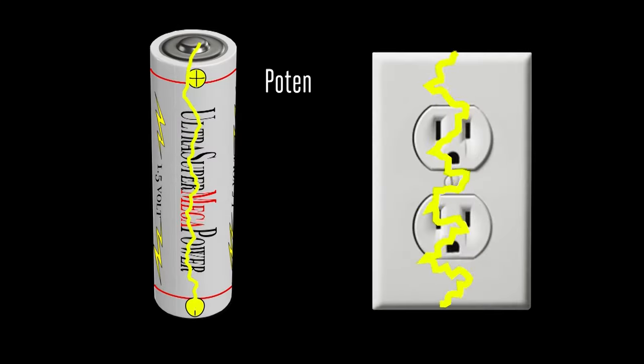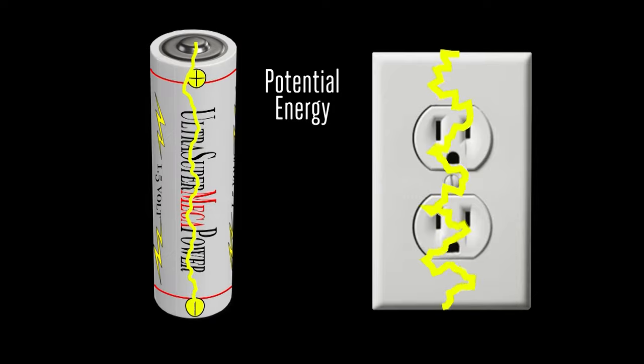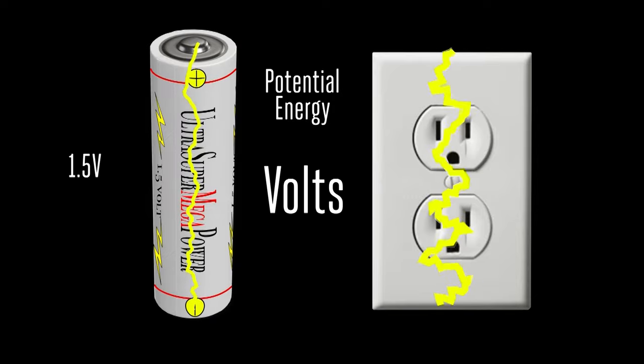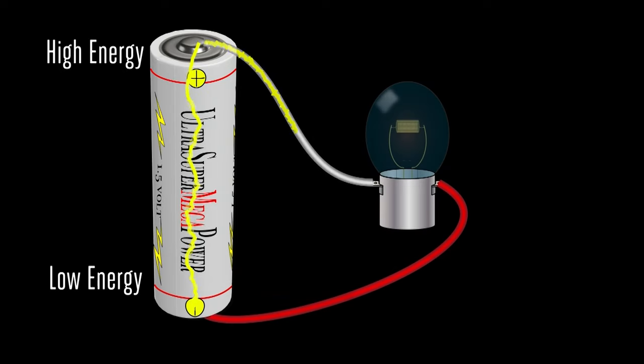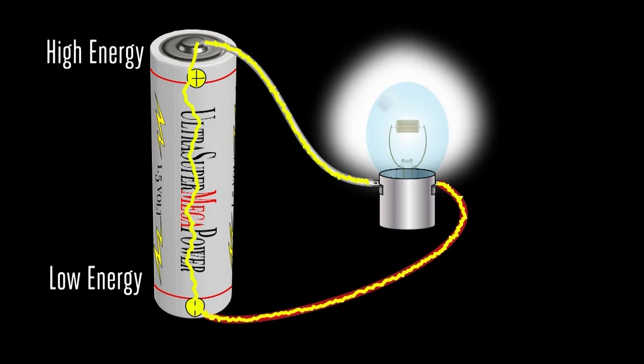When electricity is stored in something like a battery or in this wall plug, it's called voltage, since it hasn't yet been used. It's potential energy. Electricity only flows from a high energy source, the positive, to a low energy source, the negative.